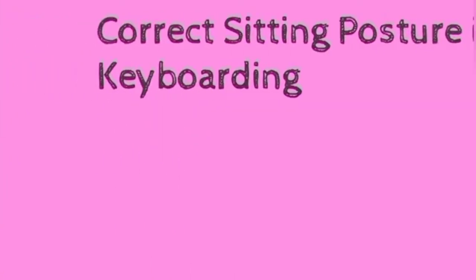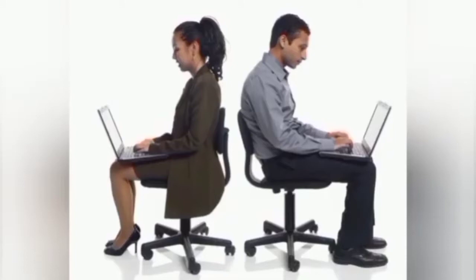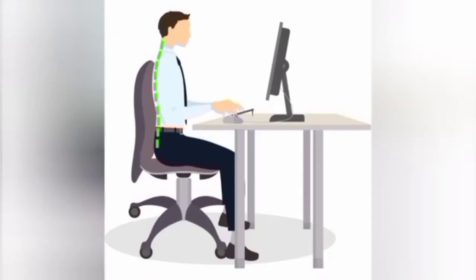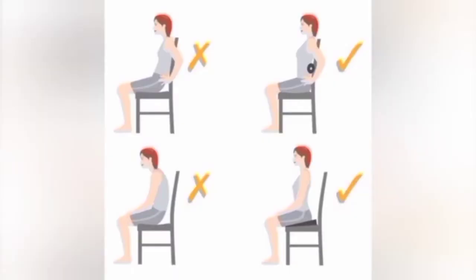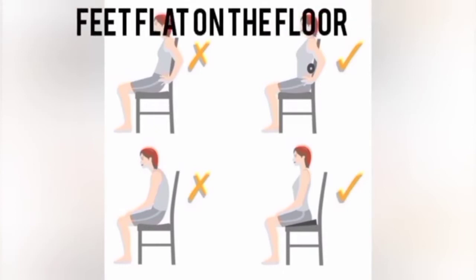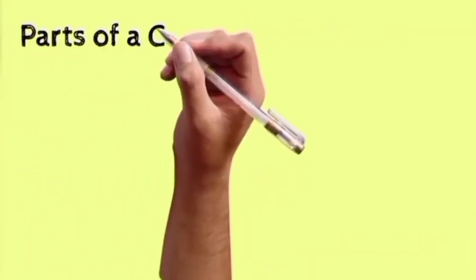Now, correct sitting posture. In keyboarding, there are certain postures that are acceptable. First, you must sit in an upright position. Secondly, keep the feet flat on the floor. Let your arms be relaxed when typing and let your fingers be curved, as shown in the diagram. Some sitting postures are wrong and will bring ache to the back, so learn to sit upright when typing.